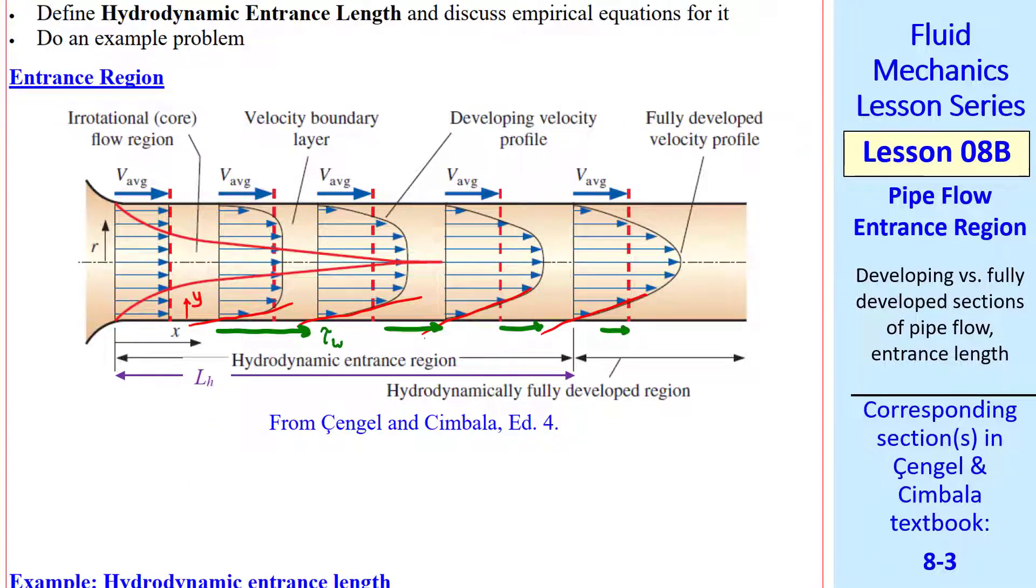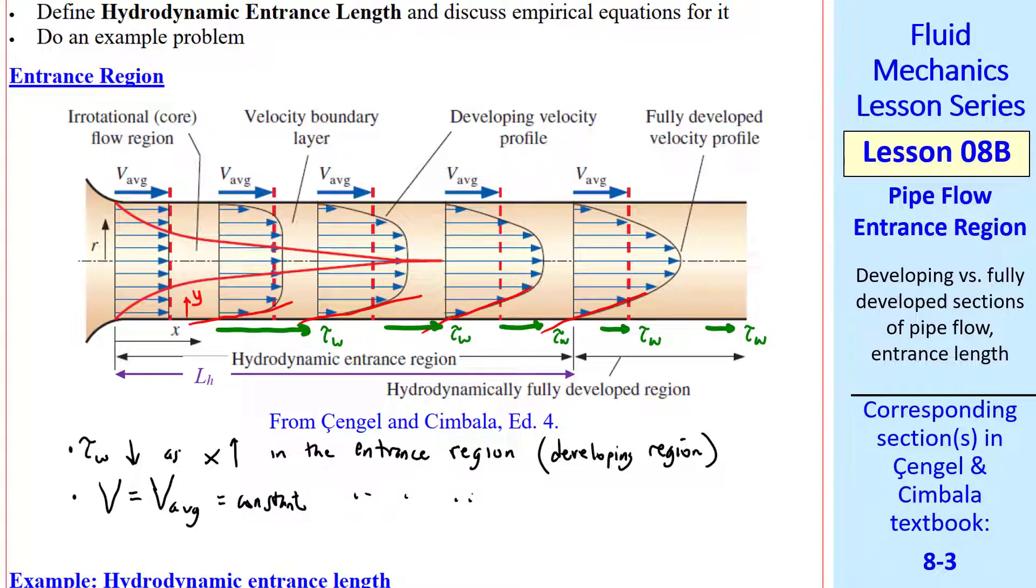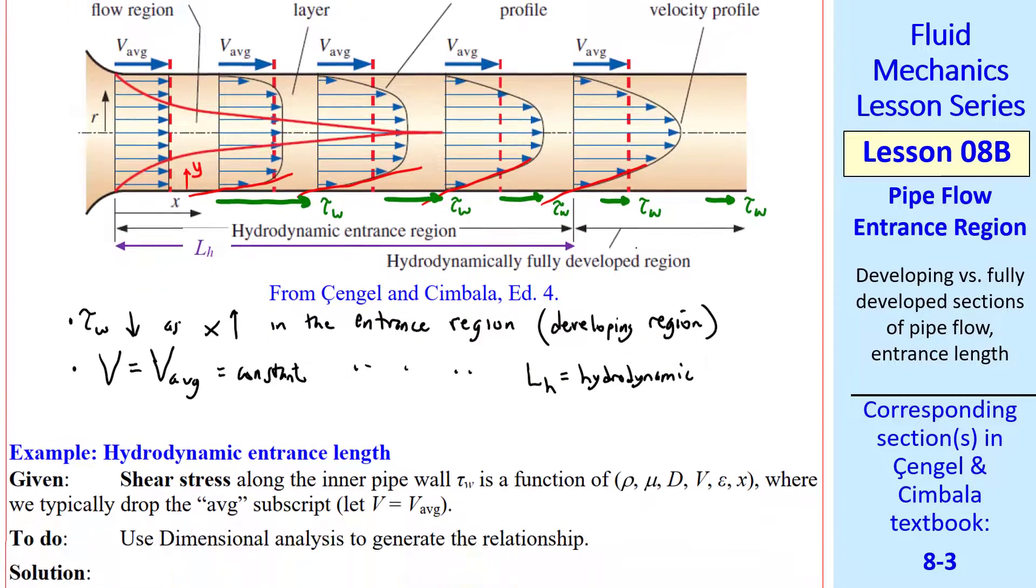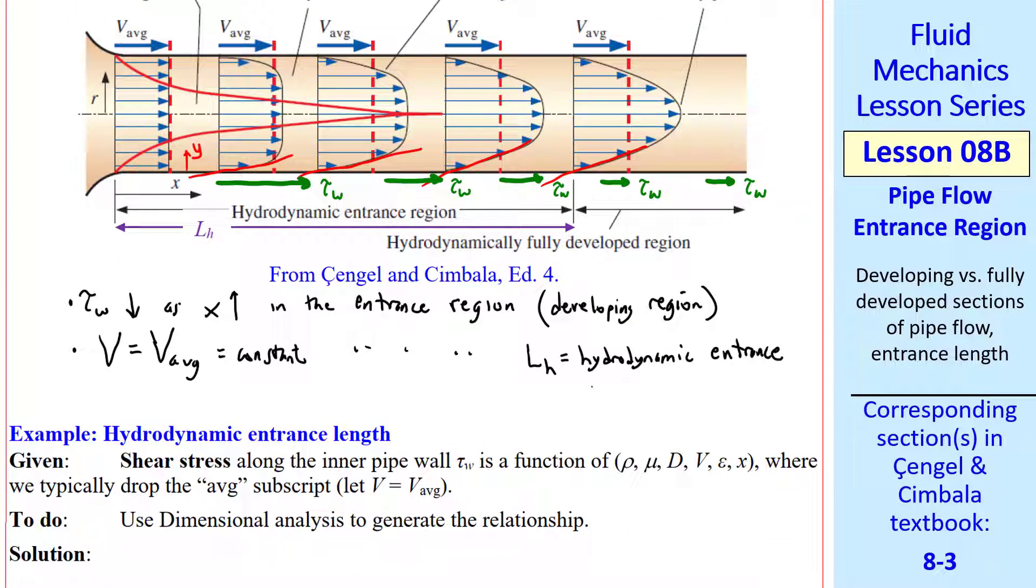So shear stress tau_w also decreases downstream. From then on it's constant in the fully developed region. So I write tau_w goes down as x goes up in the entrance region, also called the developing region. But V, or V_average, is constant in the entrance region. You can see that here. L_h is the hydrodynamic entrance length.